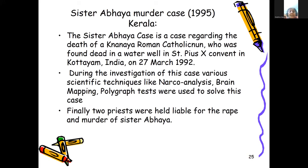The Sister Abhya case regards the death of a Kananya Roman Catholic nun found in a water well in a convent in Kottayam, India on 27th March 1992. Many investigations were done by Kerala police. The case was then transferred to CBI, and during investigation various scientific techniques like narco analysis, brain mapping, and polygraph test were used. Finally, two priests were held liable for the rape and murder of Sister Abhya.